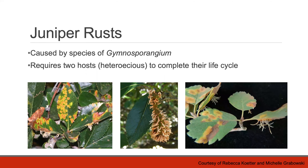Juniper rusts are caused by species of Gymnosporangium. Each species of Gymnosporangium spends part of its life cycle on a juniper host and part on one or more hosts in the rose family, requiring both hosts to complete their life cycle. Juniper rusts have similar disease cycles but differ in which juniper and rosaceous species they infect.